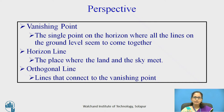The vanishing point is the single point on the horizon where all the lines on the ground level seem to come together — they are drawn to the vanishing point. Next is the horizontal line, drawn towards the top of the paper, representing the place where the land and the sky meet. Orthogonal lines are lines that connect to the vanishing point. Perspective is the art of representing the three-dimensional view of an object on a two-dimensional surface.